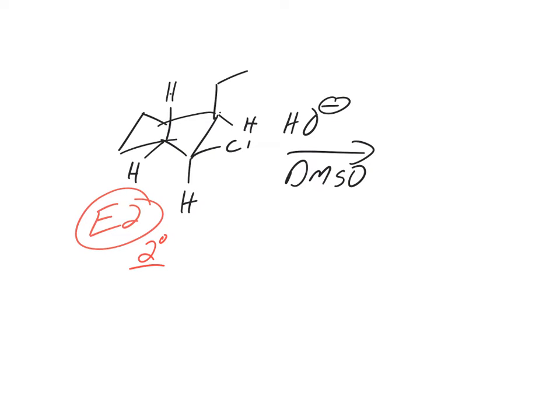But we have a chair. And what did I tell you all about chairs and leaving groups? What position do they have to be in? They have to be axial. So right now this chloride is equatorial. So you need to be able to do a ring flip. Got to be able to do a ring flip still.